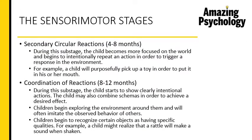The third sub-stage is secondary circular reactions, from the fourth to the eighth month. During this sub-stage, the child becomes more focused on the world and begins to intentionally repeat certain actions in order to trigger a response. An example is a child purposefully picking up a toy to put it in their mouth — that is an intentional action.